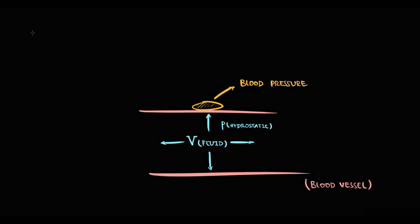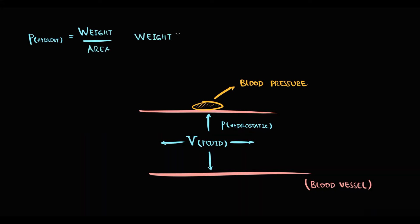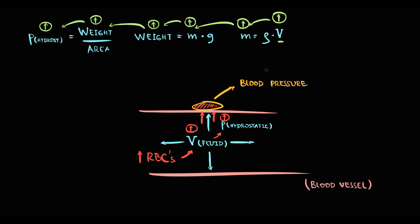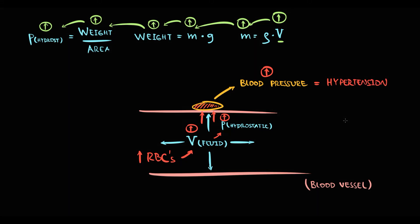Hydrostatic pressure of a fluid equals the weight of fluid acting on some area, where weight equals mass times gravity constant, and mass equals fluid density times fluid volume. So in polycythemia, increasing red blood cells causes increasing blood volume; the higher the blood volume, the higher the hydrostatic pressure, thereby the higher the force acting on the blood vessel wall — resulting in higher blood pressure. So in polycythemia, with increasing total blood volume, hypertension develops.